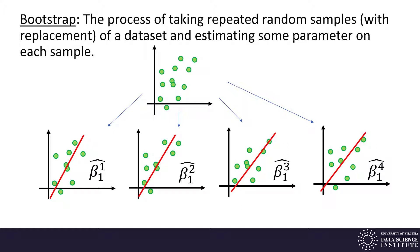b1 hat with a superscript of 1, 2, 3, or 4. Then we can look at the standard deviation of these b subscript 1 superscript i hats and that will give us an estimate of the uncertainty of our estimate of the beta 1 or the slope of the regression line.